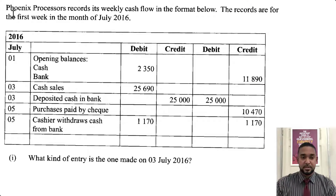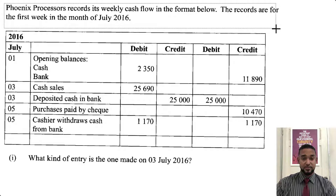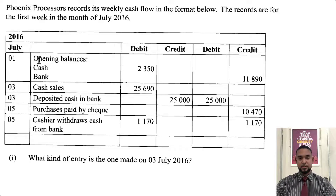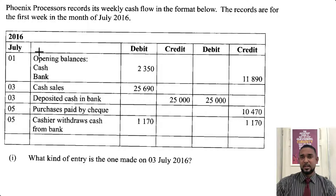So this is the next part of the question. It says Phoenix Processors records its weekly cash flow in the format below — the records are for the first week of July 2016. This looks like a really weird way to do a cash book. It says cash flow, but more or less it's a cash book. As you can see, it has debits and credits — if you were doing a cash flow statement, you won't have debits or credits.